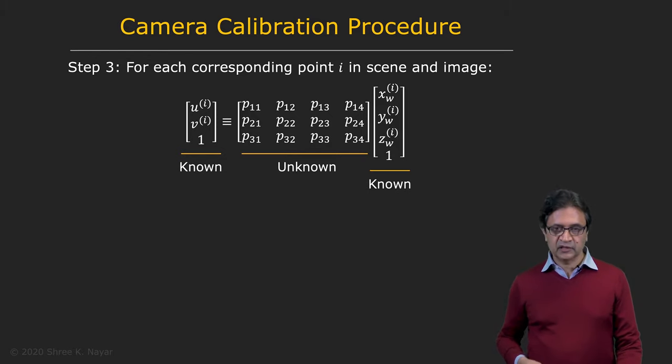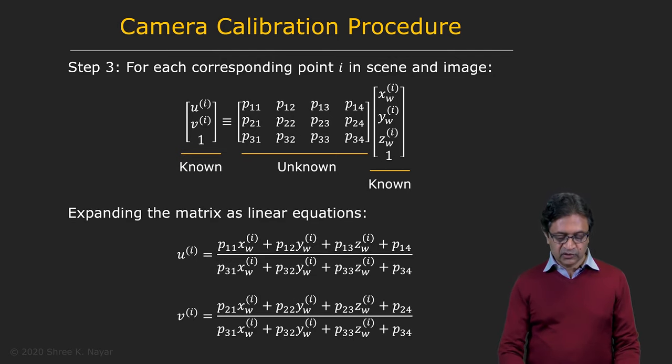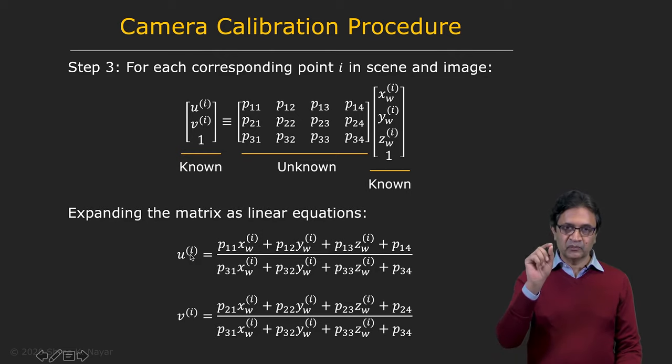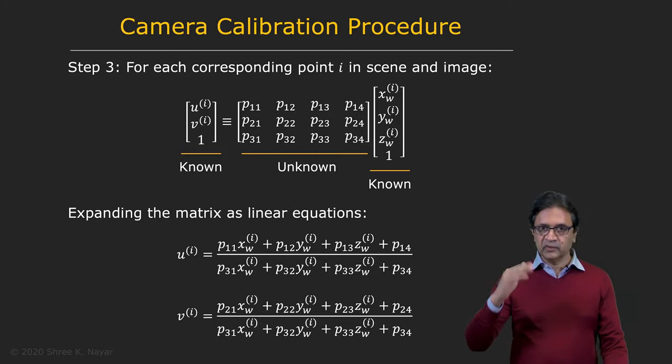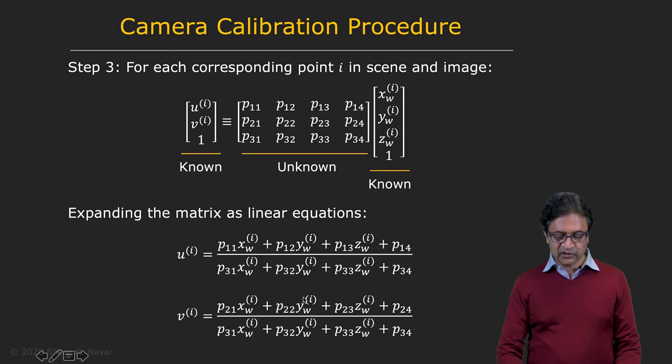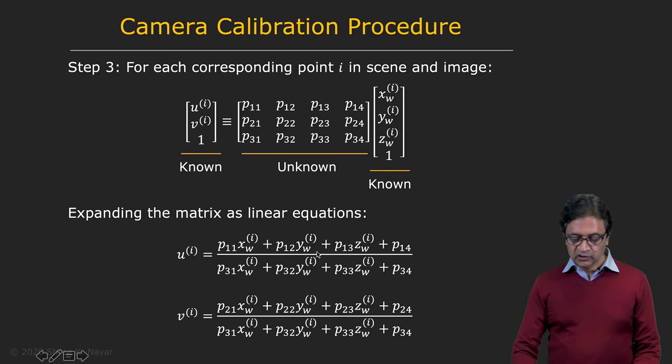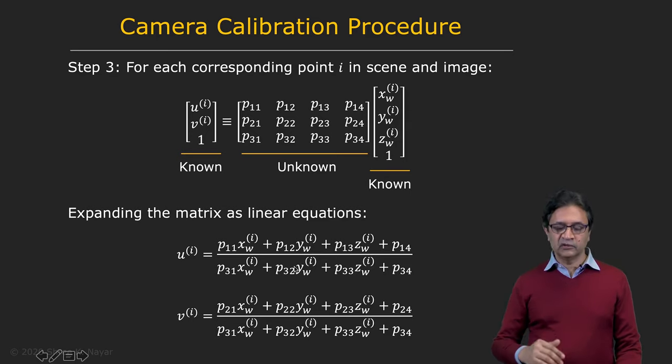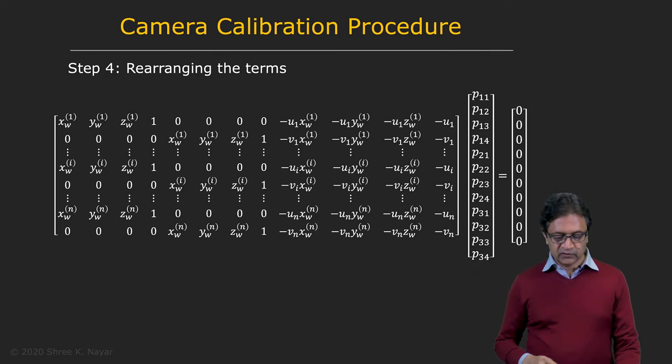Now, if you take this expression and you essentially write it out, then you get these two equations, one for U and one for V. The subscript I corresponds to the point we are looking at, so we go from one through N in terms of corresponding points. So for each one of these points, we get an equation, a pair of equations that looks like this. So we can rewrite all of those equations in matrix form as follows.